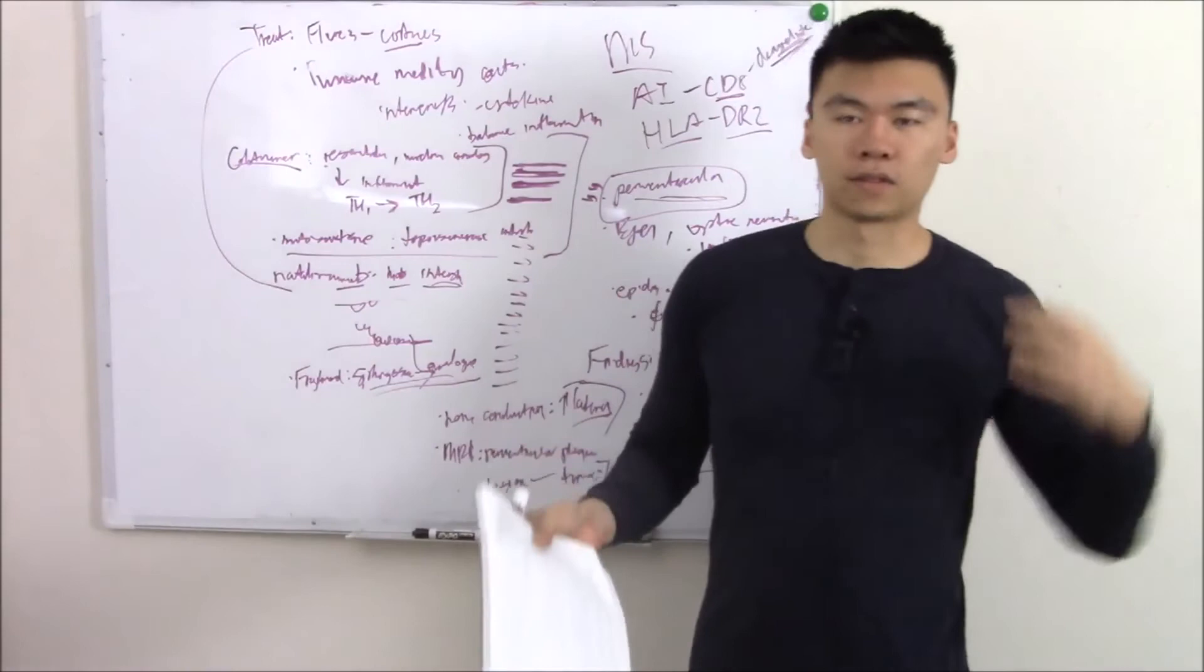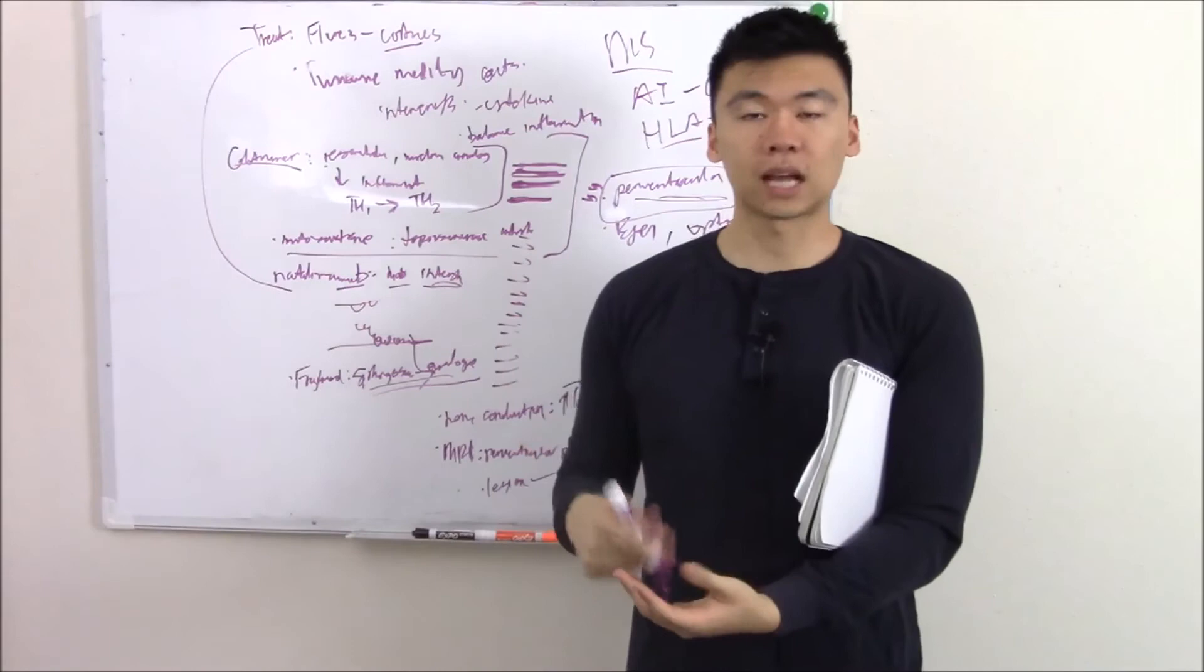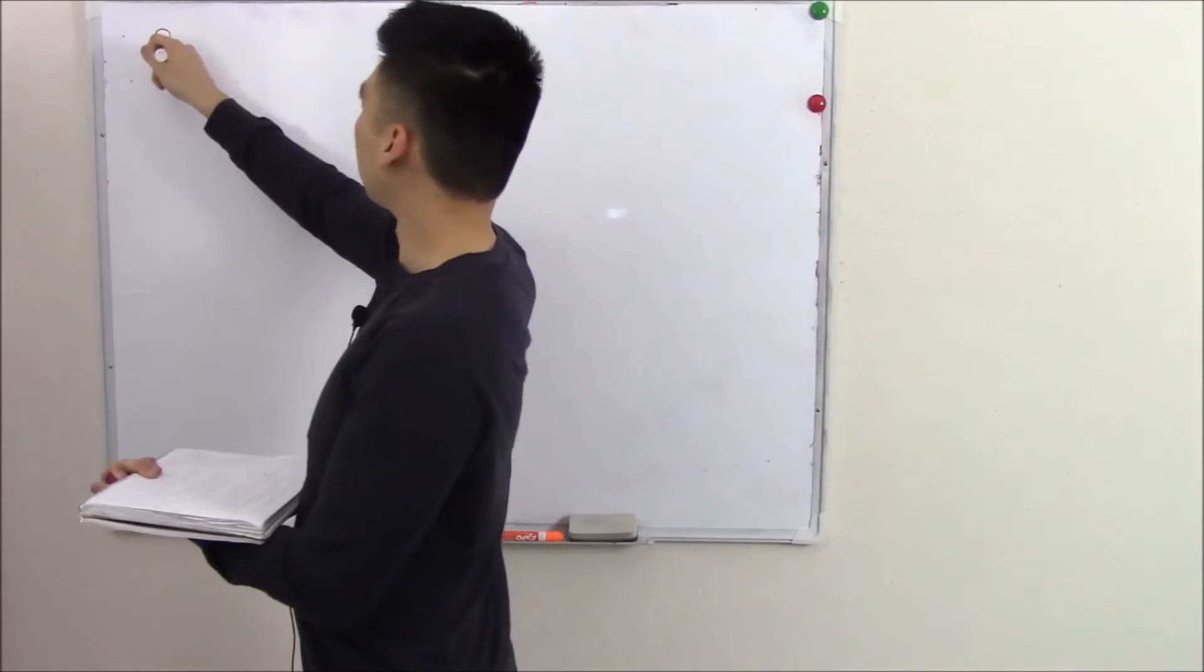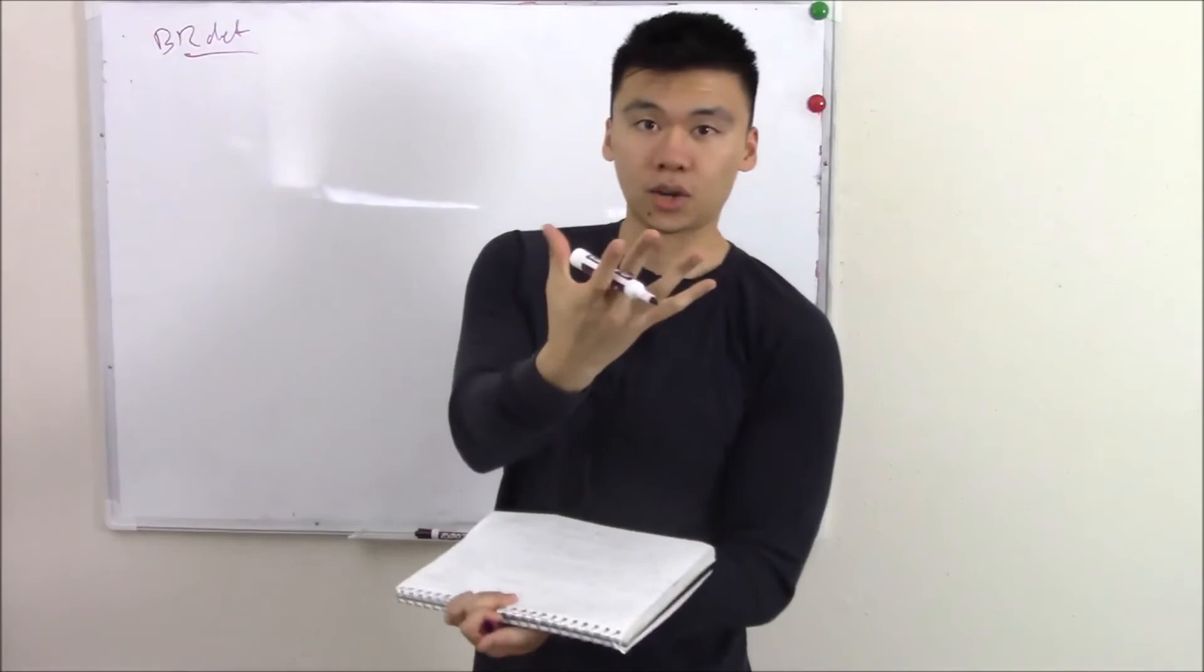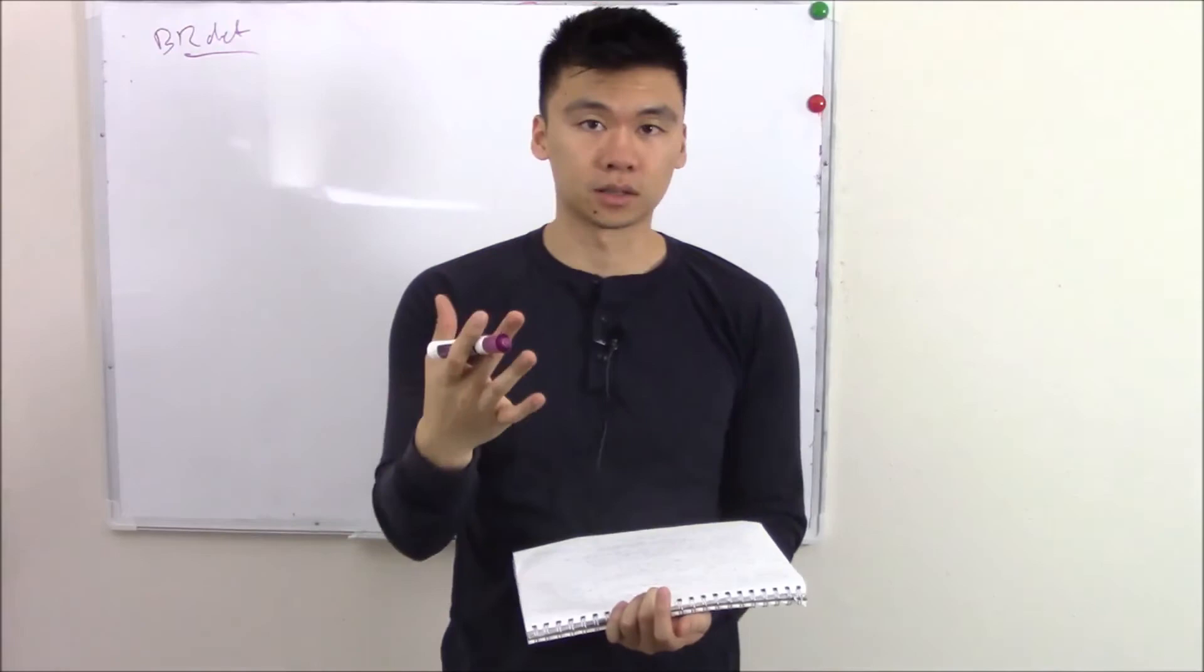That is multiple sclerosis, that is pharmacology. These are all demyelinating disorders that like to affect the brain more. Now let's talk about some demyelinating disorders that can affect your spinal cord. The first one is B12 deficiency. Didn't we say B12 deficiency causes neuro deficits? Now you know why—it causes demyelination of your spinal cord.